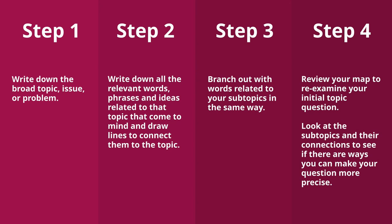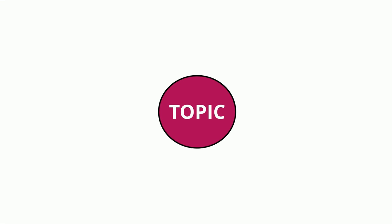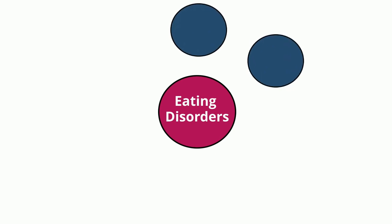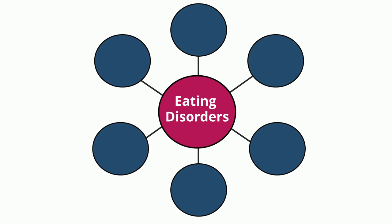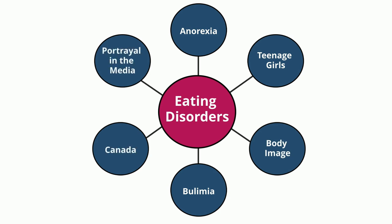Look at the subtopics and their connections to see if there are ways you can make your question more precise. Here's an example of a concept map. First, we write down the broad topic, issue, or problem, which will be eating disorders. Now we write down the relevant words, phrases, and ideas related to that topic and connect them to the topic. I can think of anorexia, bulimia, teenage girls, body image, portrayal in the media, and Canada.